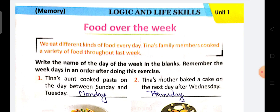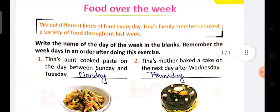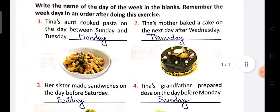Write the name of the day of the week in the blanks. Yahan par aap dekhe kuch blank hai. In blanks mein humein days likhne hain — name of the days likhna hai. Remember the weekdays in order. After completing this exercise, aapko in days ke naam sequence wise likhne hain — like Monday, Tuesday, Wednesday, Thursday, Friday, and Saturday.